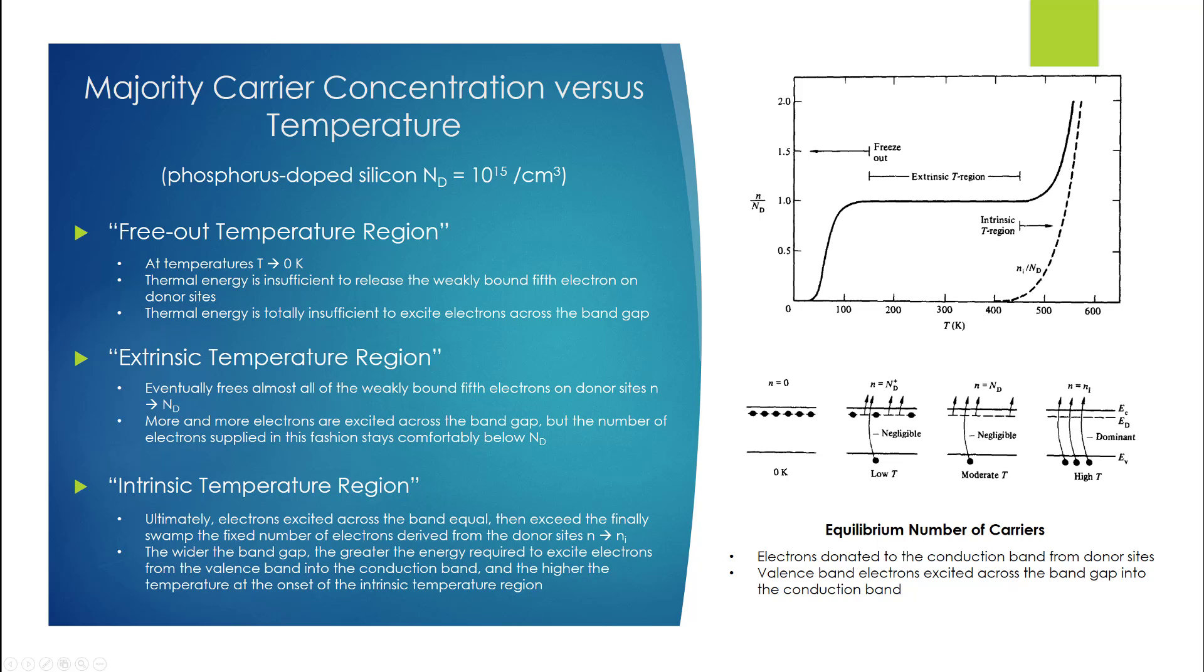In this video, we will discuss the carrier concentration's dependence on ambient temperature. The top figure shows the typical majority carrier concentration versus temperature relationship in a phosphorus-doped silicon sample with Nd = 10^15 per cubic centimeter.